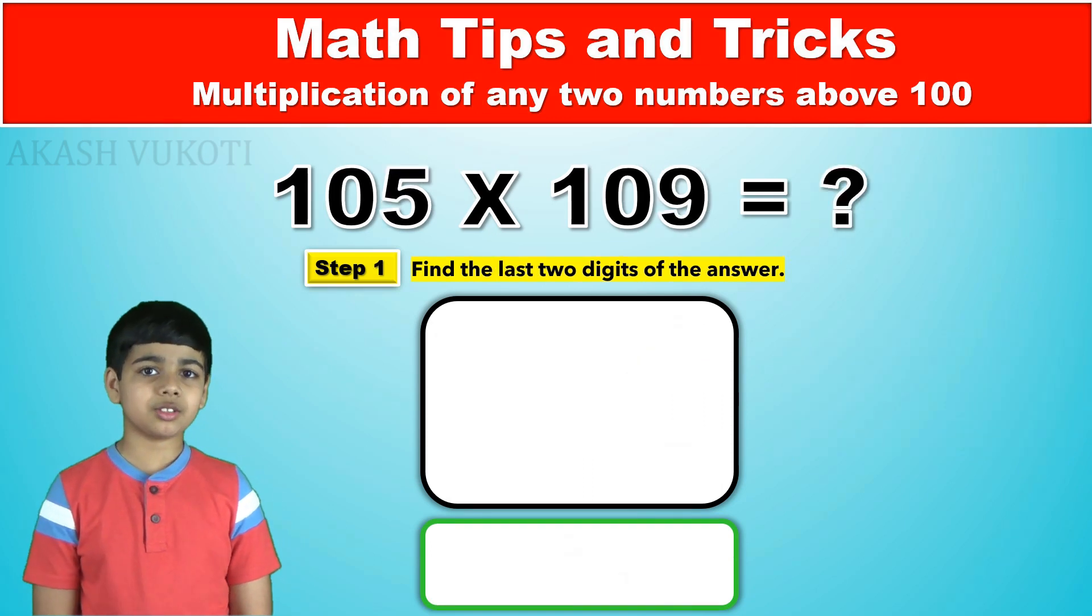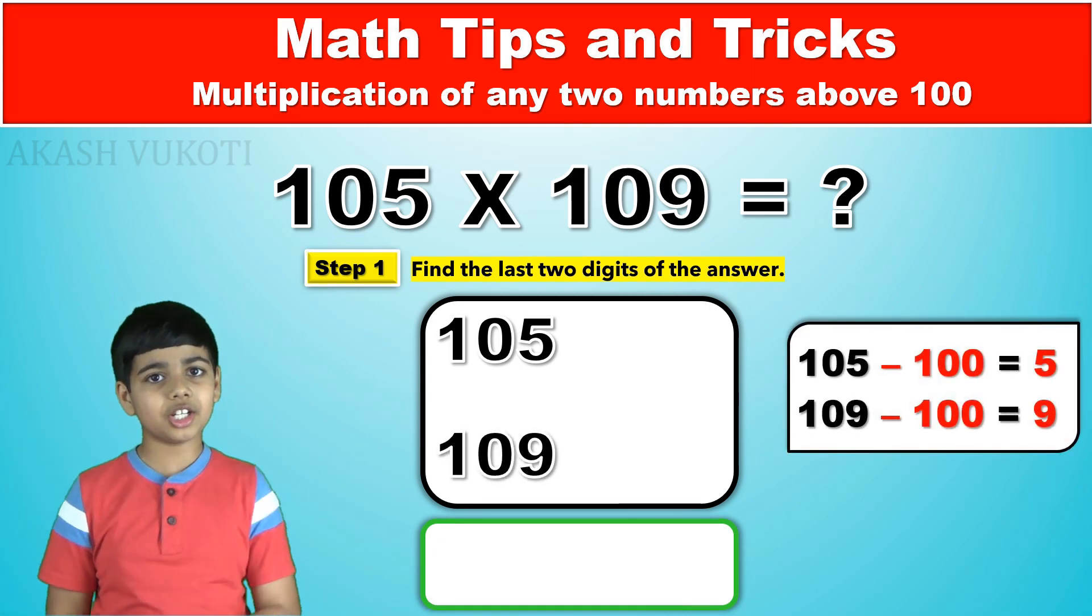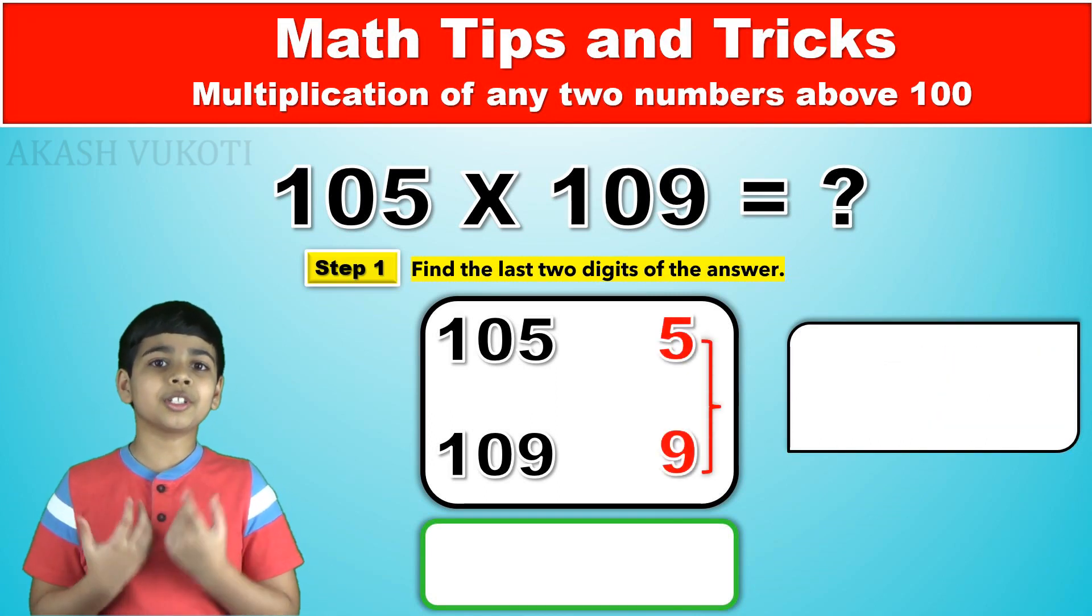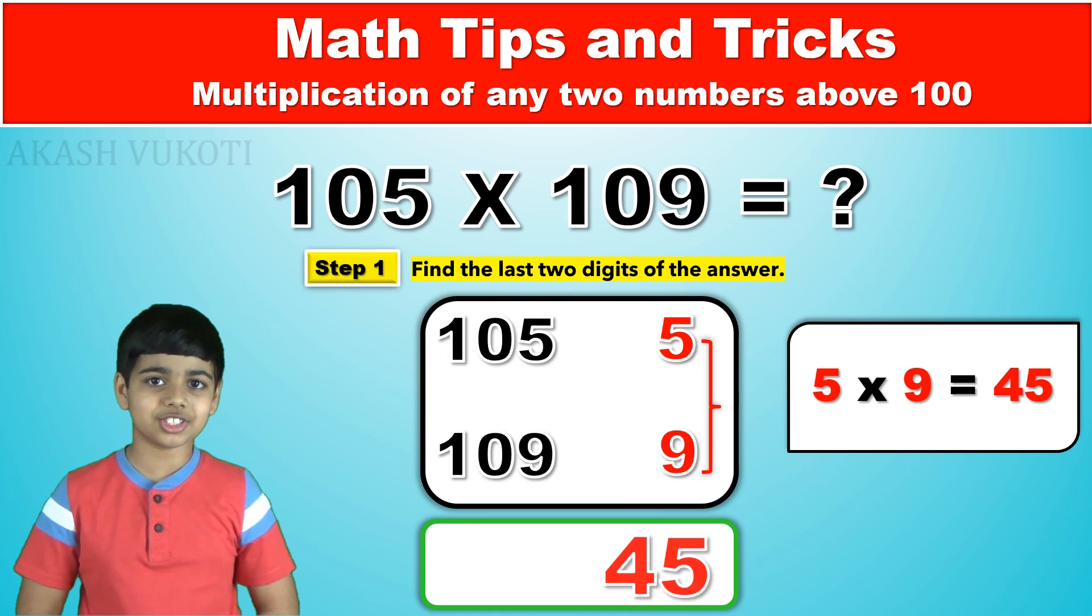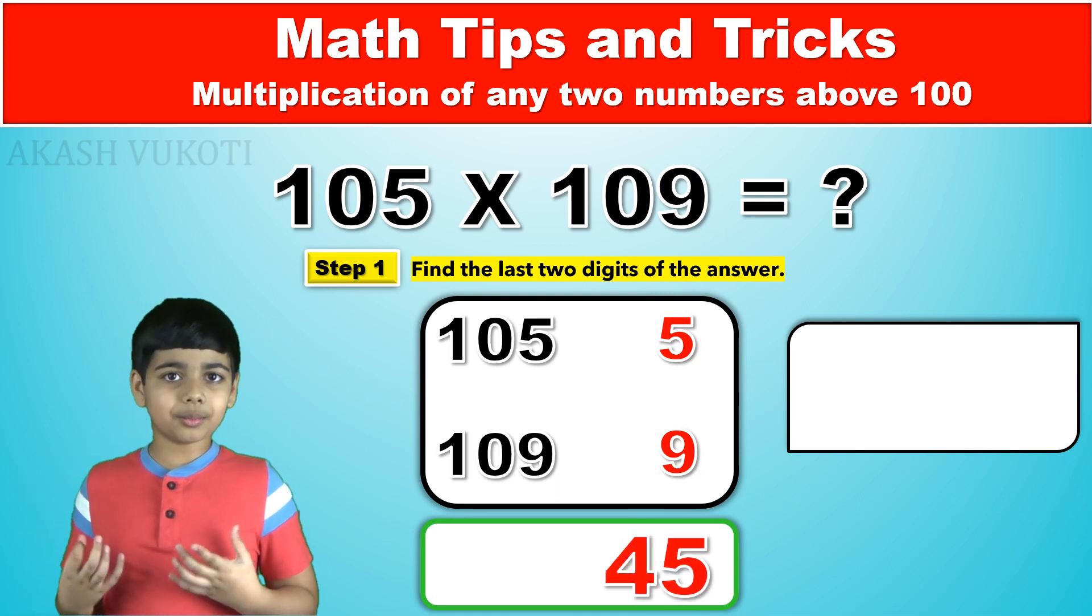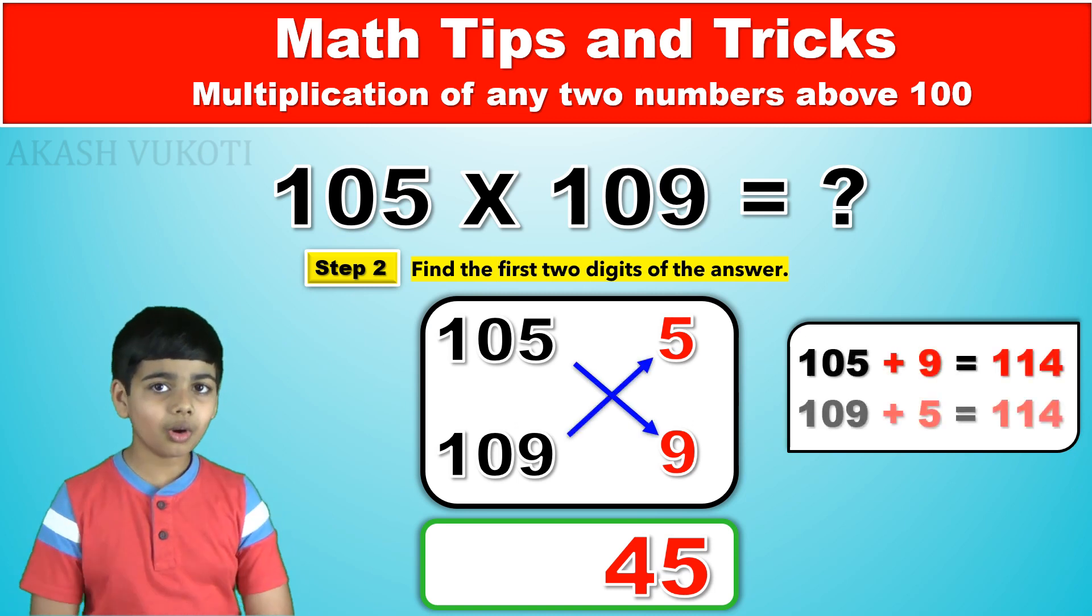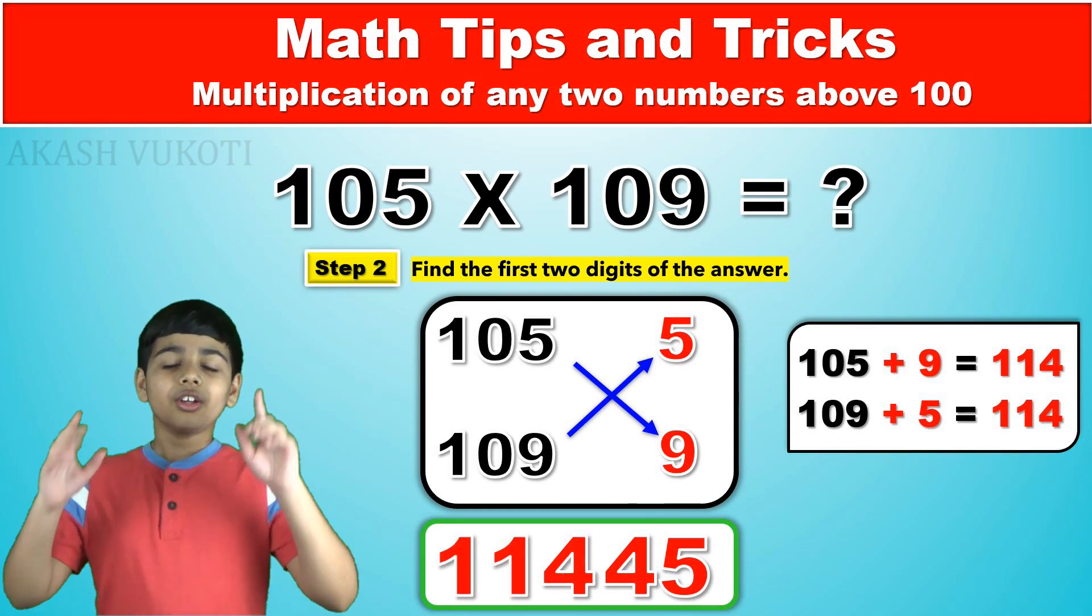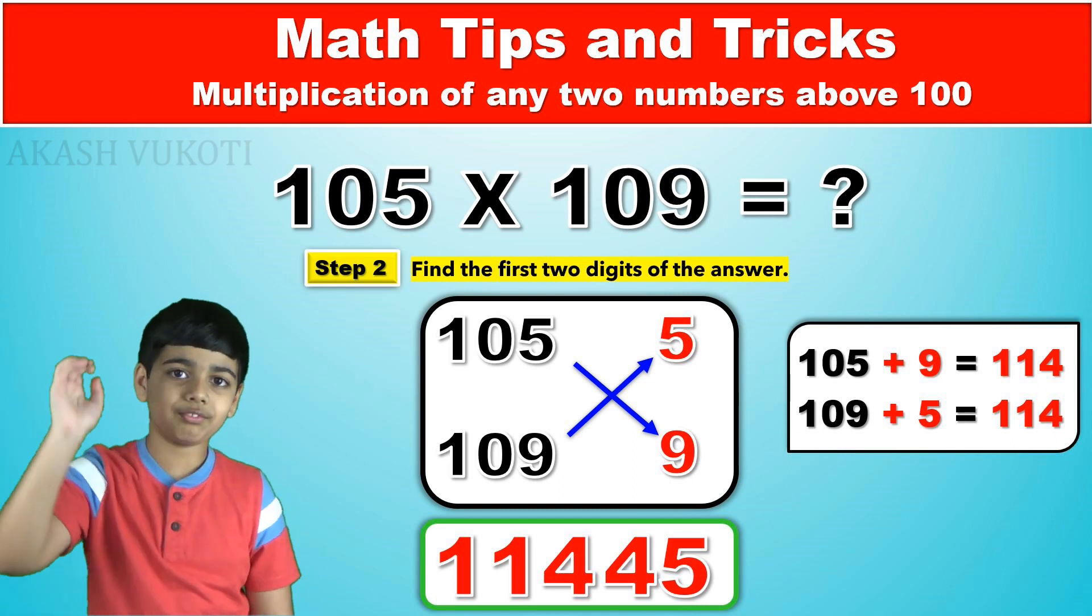Let's do yet another one, like 105 times 109. We take the difference between each number and 100. 105 minus 100 is 5, and 109 minus 100 is 9. We write these numbers down. Next, we multiply both differences together. And 5 times 9 is 45, which are our last two digits. Then, we cross-add the numbers from the opposite difference in the equation. We get 114.